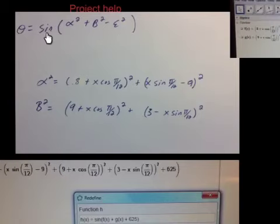So the idea is that you have within this sine function, you have other functions. So you have alpha squared and beta squared, and they're defined as weird-looking trig functions.